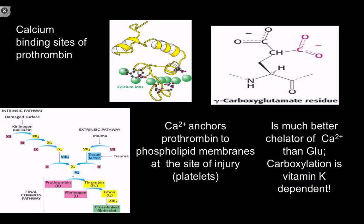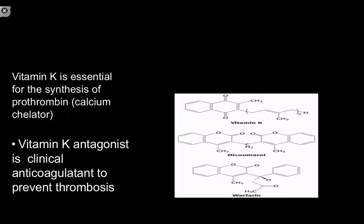If you've ever worked in healthcare, you know about the anticoagulant EDTA. EDTA is a calcium chelator that works by a similar mechanism — preventing calcium from interacting with prothrombin, which prevents clotting. Vitamin K is essential for this process; in fact, in Swedish, 'clotting' is spelled with a K, which is why it's called vitamin K.